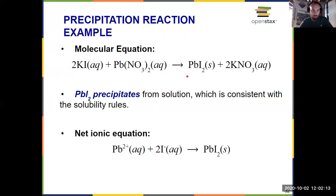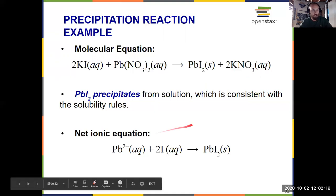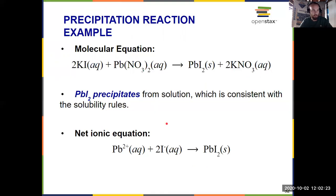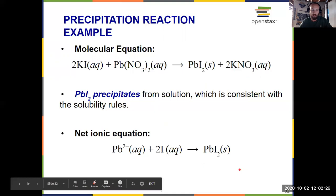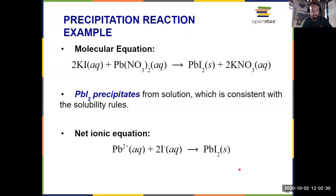So that's why this is a solid, whereas everything else is aqueous. So lead iodide, PbI2, precipitates from solution. And if you write the net ionic equation, you can clearly see that this is a precipitation reaction. Lead iodide is the precipitate. Aqueous things going to a solid precipitate, that's a precipitation reaction.